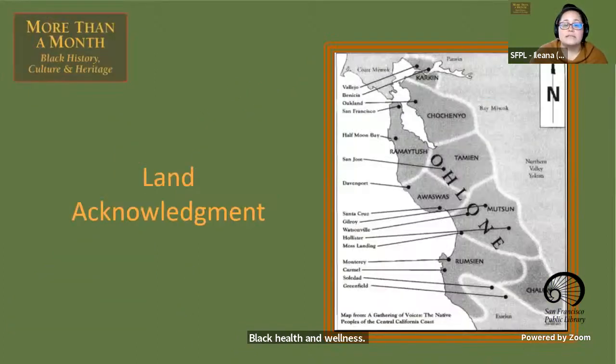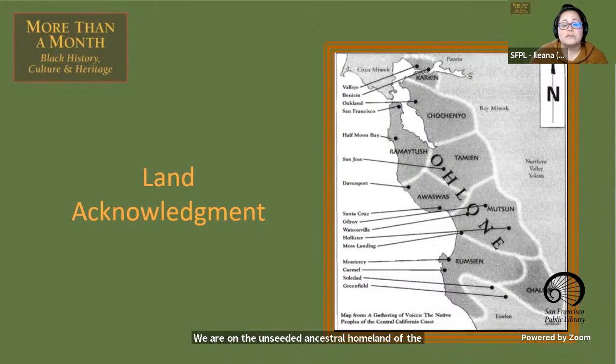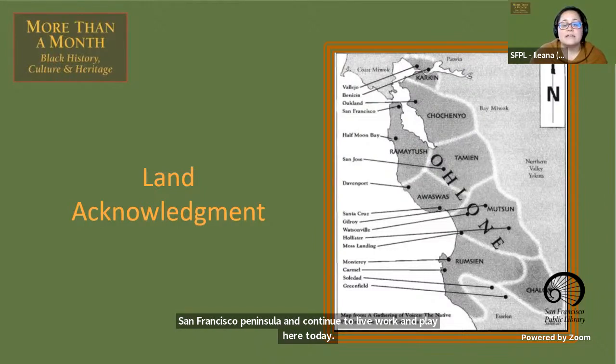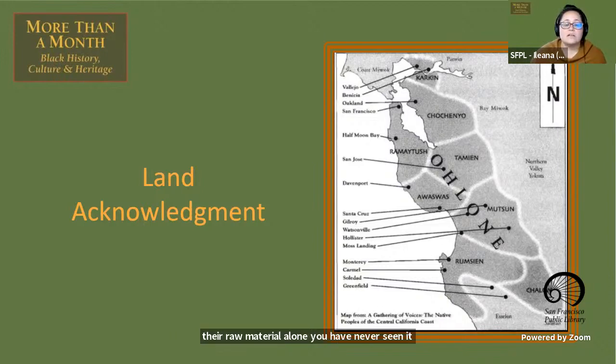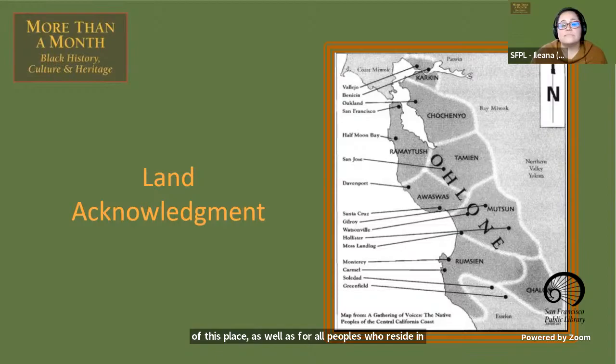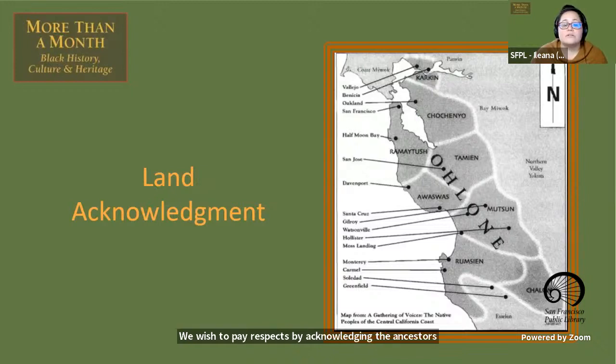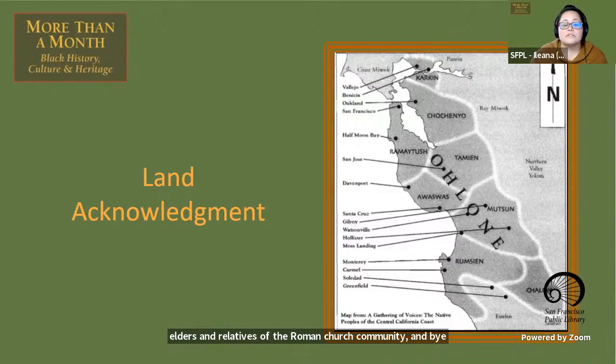We are on the unceded ancestral homeland of the Ramatush Ohlone who are the original inhabitants of the San Francisco Peninsula and continue to live, work, and play here today. As the Indigenous stewards of this land and in accordance with their traditions, the Ramatush Ohlone have never ceded, lost, nor forgotten their responsibilities as the caretakers of this place, as well as for all peoples who reside in their traditional territory. We wish to pay respects by acknowledging the ancestors, elders, and relatives of the Ramatush community and by affirming their sovereign rights as first peoples.